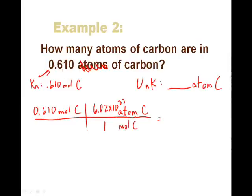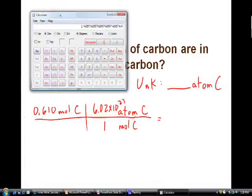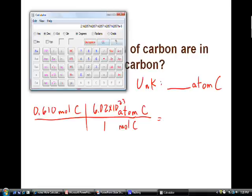And so in this particular problem, I'm going to use the calculator. 0.610 times 6.02 exponent 23. So that's, even though it doesn't look like it, that's 6.02 times 10 to the 23. And we're going to push equals.